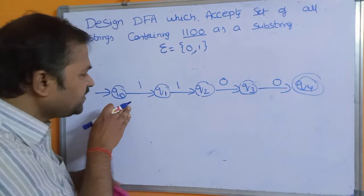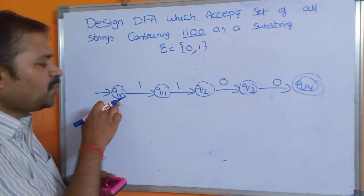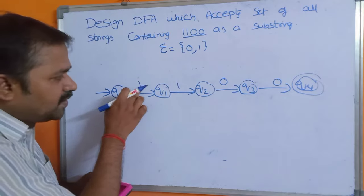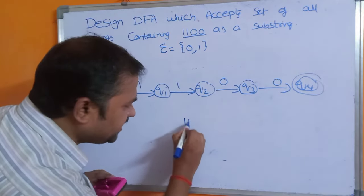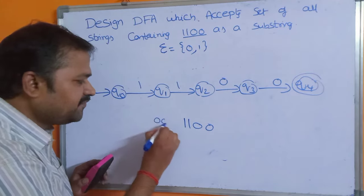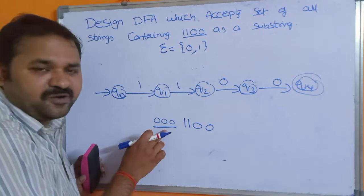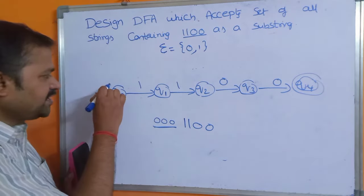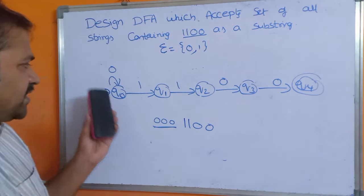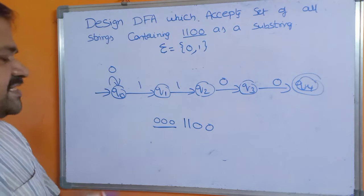On Q0, we have to apply 0. Since 1100 is the substring, before 1100 we can have any number of 0s, so we should not bother about that. We can take a self-loop on 0 at Q0. So Q0 is done — both 0 and 1 are applied on Q0.